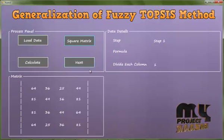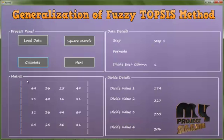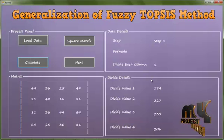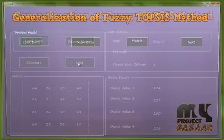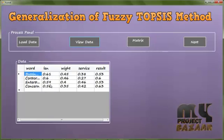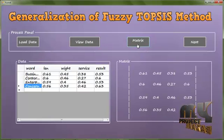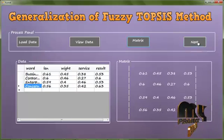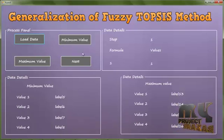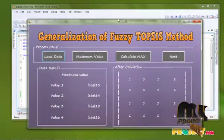Data has been loaded. Then the data is multiplied for the matrix process, then divided by the overall value to get the dividing value for the metric process. Click next — load data loads successfully. View data shows the division and multiplication results with weights applied. Click matrix data to get the metric result, then click next. Load data loads successfully. Minimum value and maximum value are found for the process.